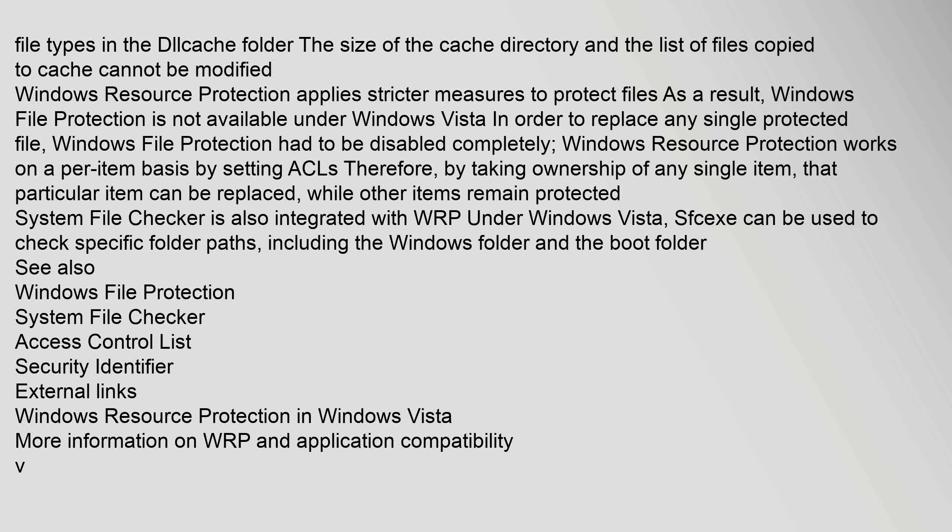Windows Resource Protection applies stricter measures to protect files. As a result, Windows File Protection is not available under Windows Vista. In order to replace any single protected file, Windows File Protection had to be disabled completely. Windows Resource Protection works on a per-item basis by setting ACLs; therefore, by taking ownership of any single item, that particular item can be replaced while other items remain protected. System File Checker is also integrated with WRP under Windows Vista.